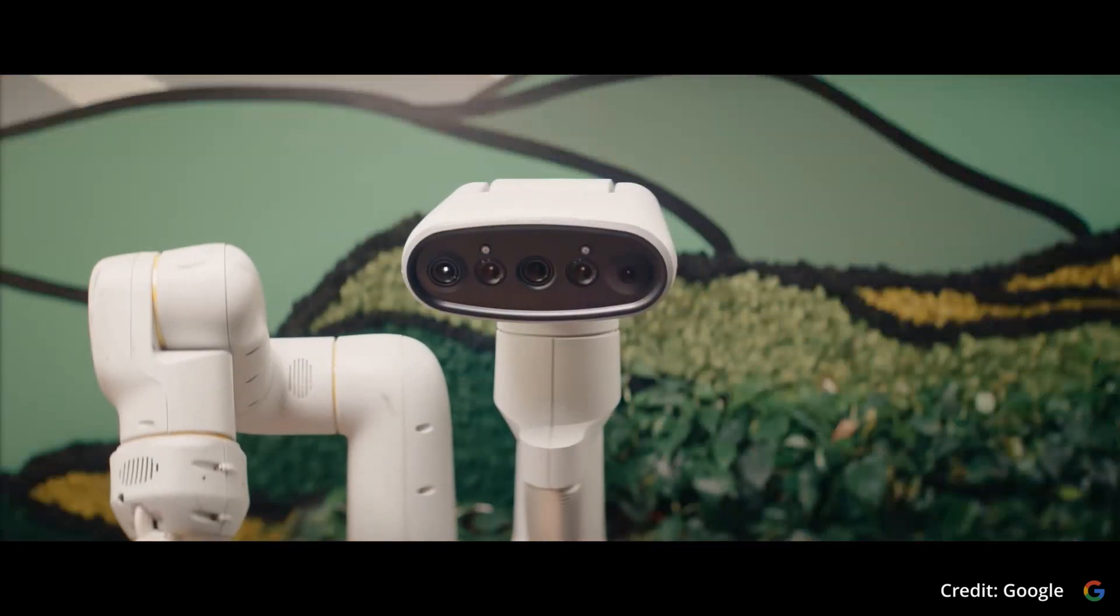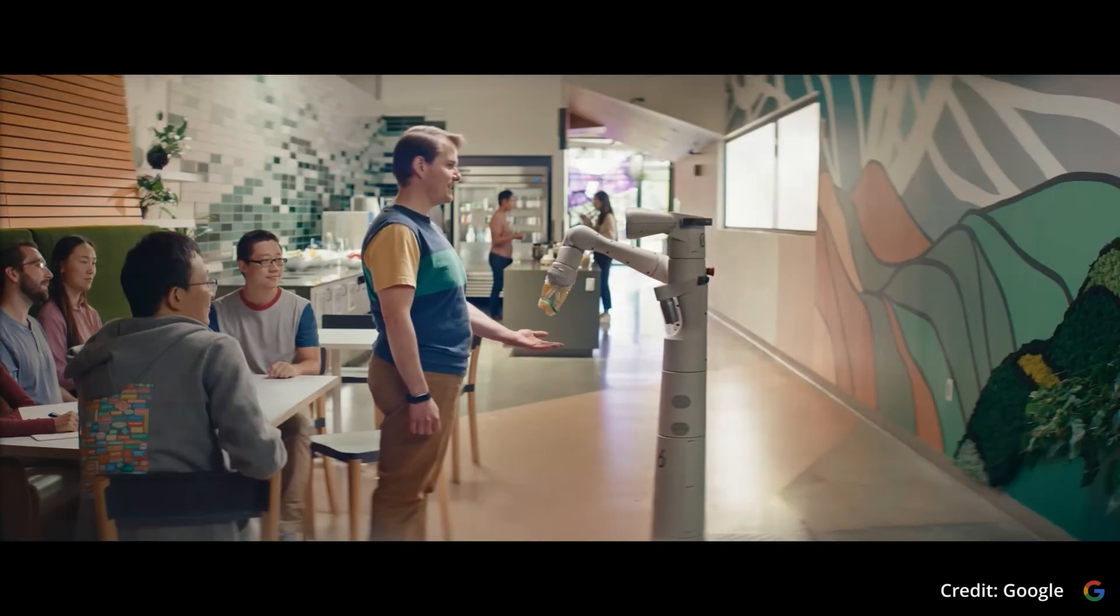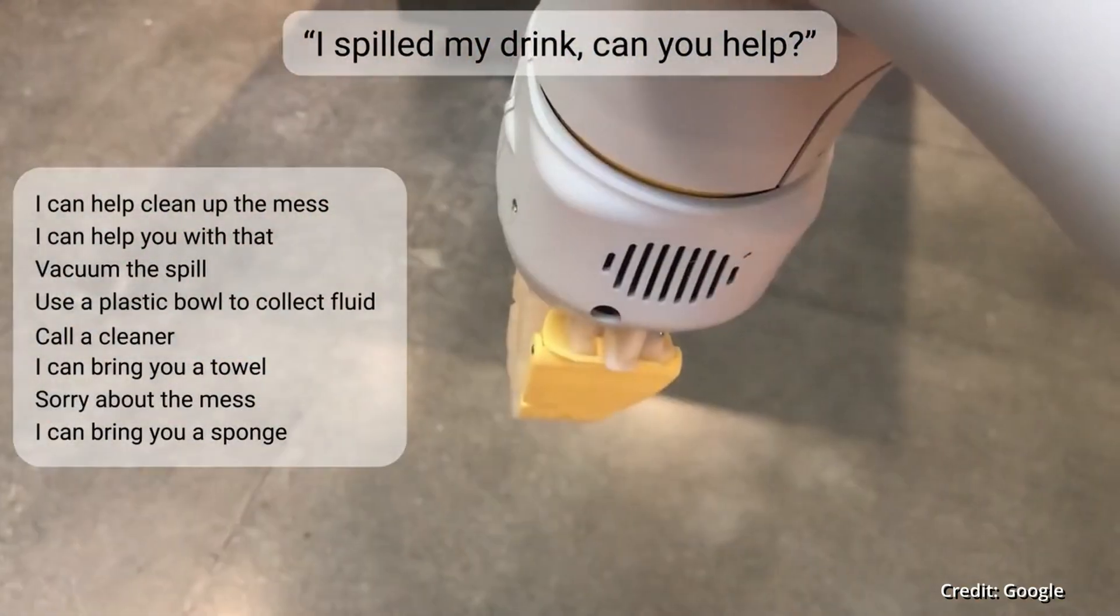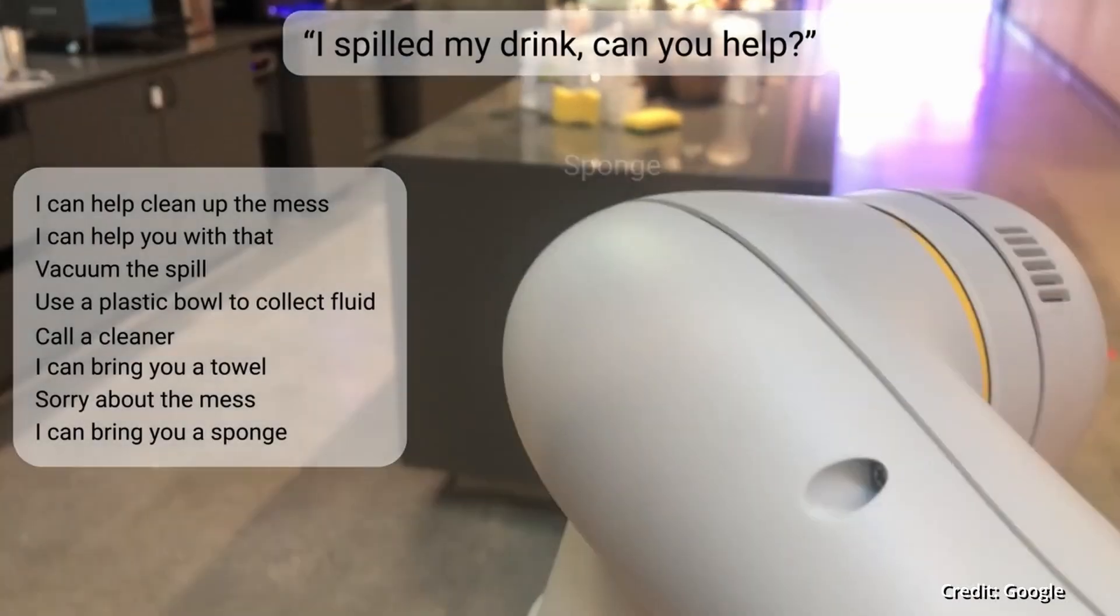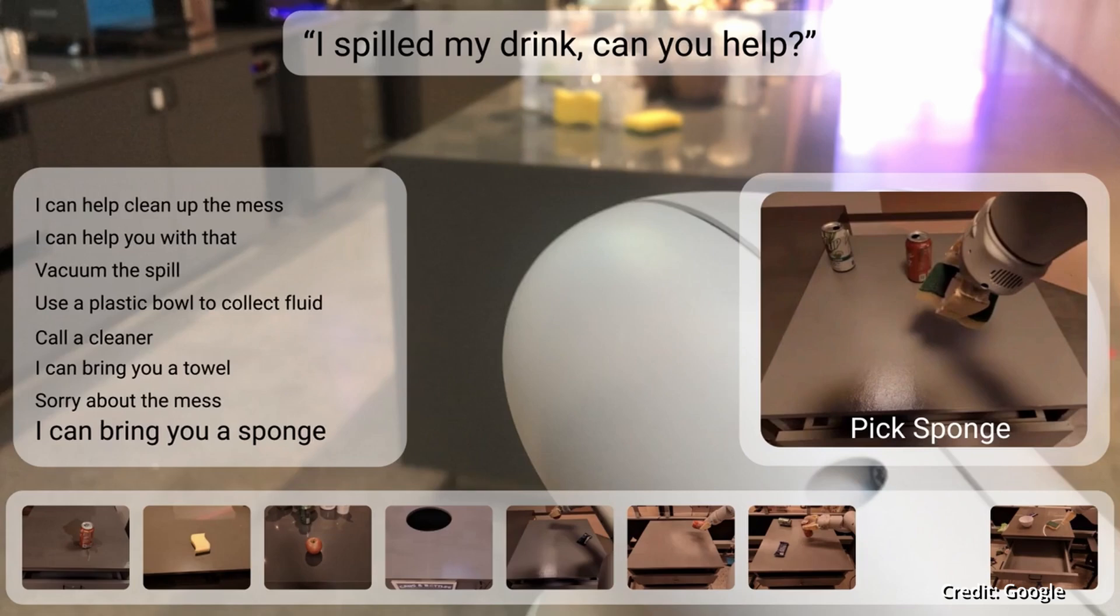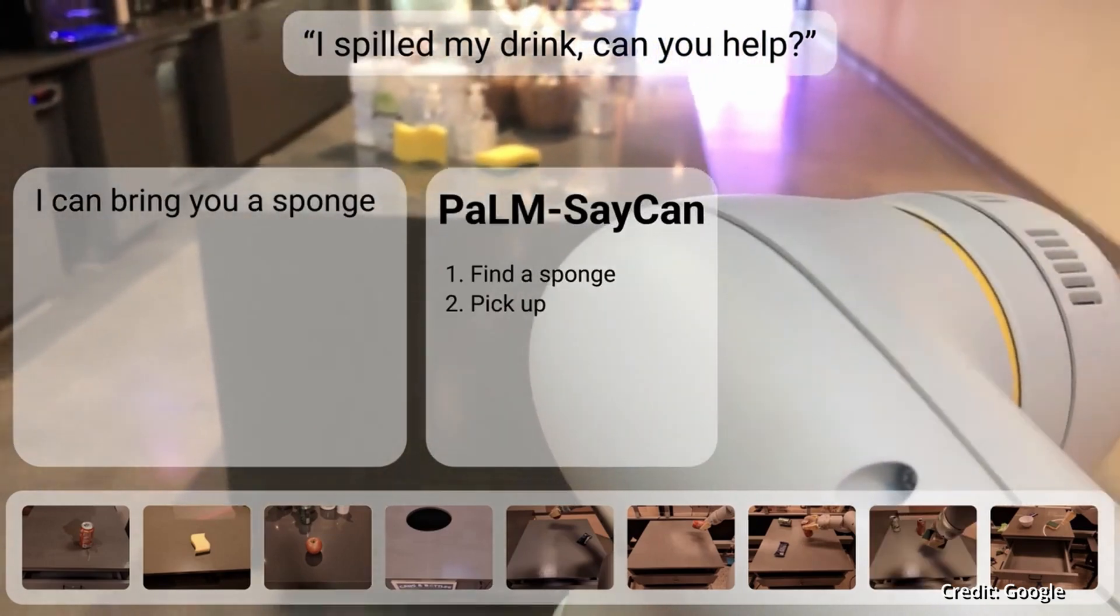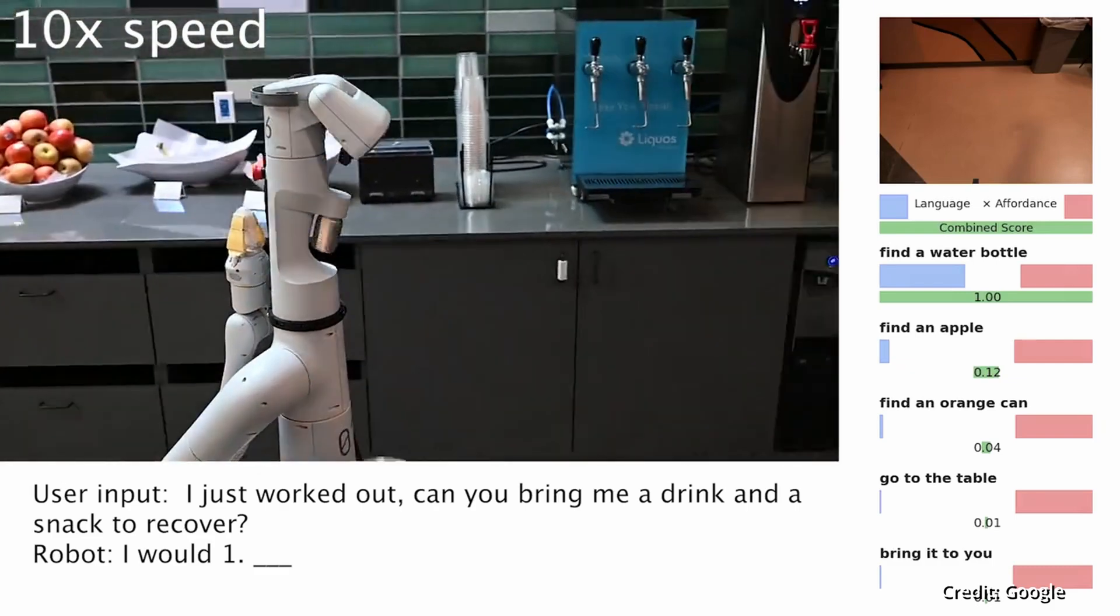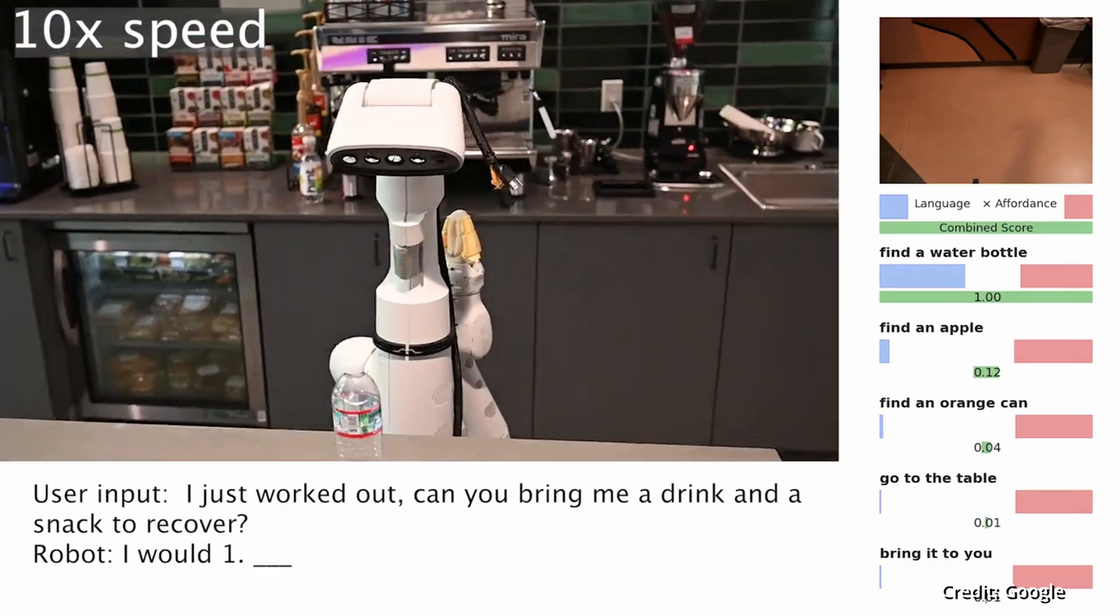In its training journey, RoboCat has utilized an incredibly diverse dataset composed of millions of trajectories, both real and simulated. Four different types of robots and many robotic arms have been employed to gather vision-based data, effectively creating a kaleidoscope of tasks for RoboCat to learn and adapt. The result is a robot capable of quickly learning to operate different robotic arms and tasks within a few hours.